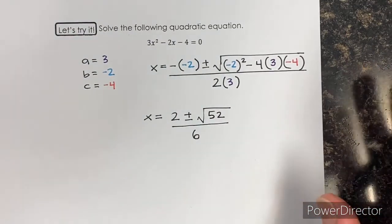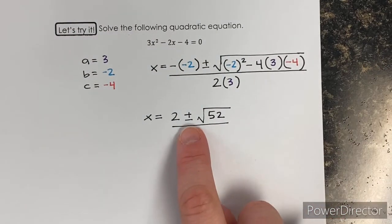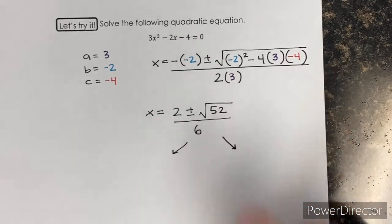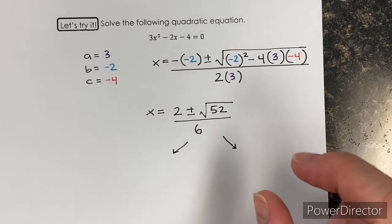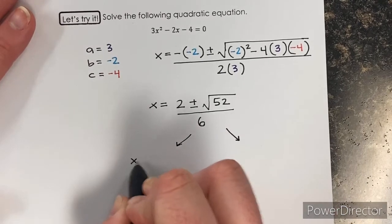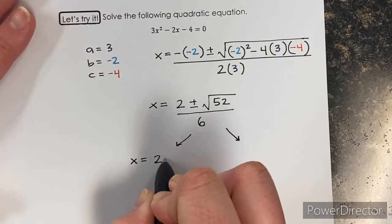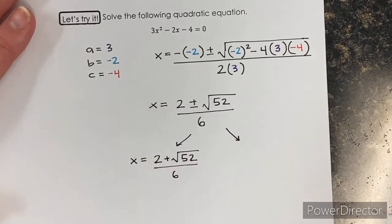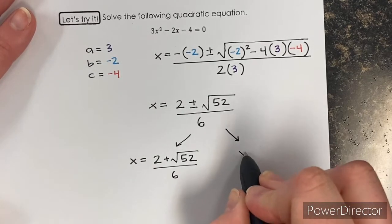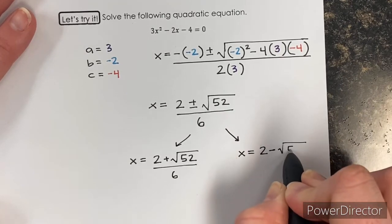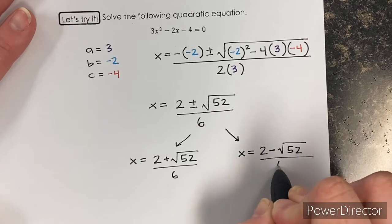Okay, so we have it simplified. Now we have to address that plus or minus — that just means there are technically two numbers sitting there, one with a positive and one with a negative. So we're going to split it up so we can get both of them. It's two plus square root of 52 over six, and this one is going to be two minus square root of 52 over six.